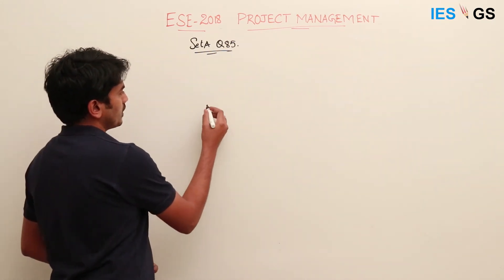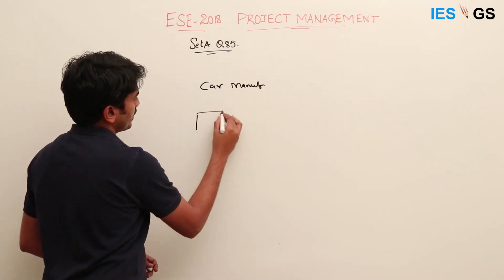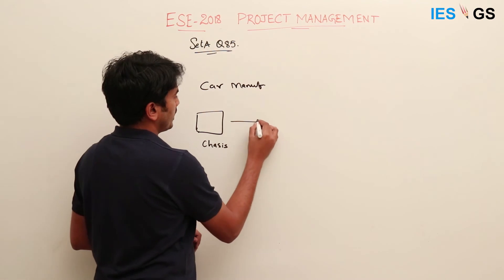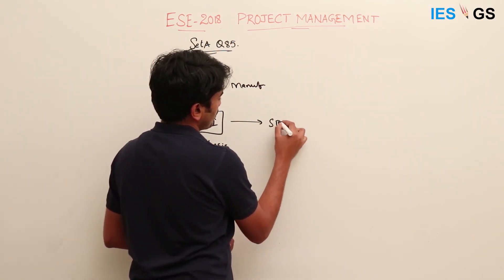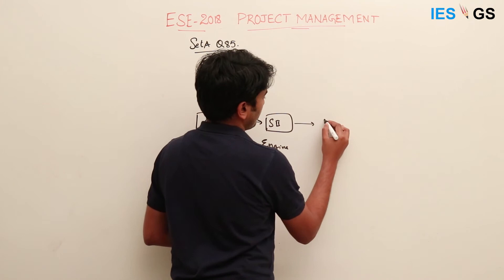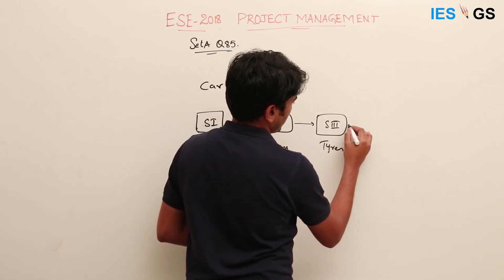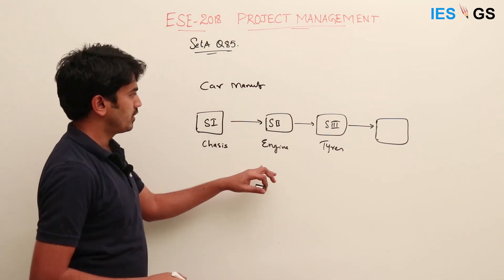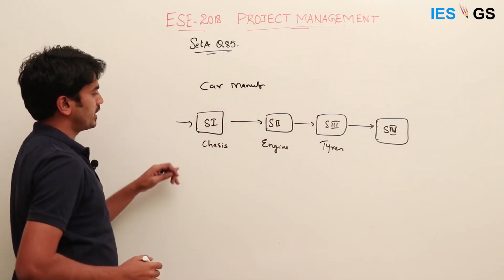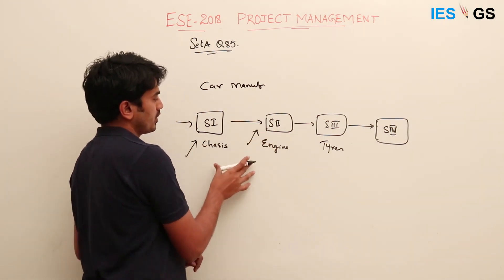For example, take a car manufacturing facility. Stage one is chassis assembly, stage two is engine assembly, and stage three is where they assemble the tires. After assembly there are more stages. At stage two you need a chassis and then place the engine; at stage three you need to put the tires, which are coming from a third-party supplier.